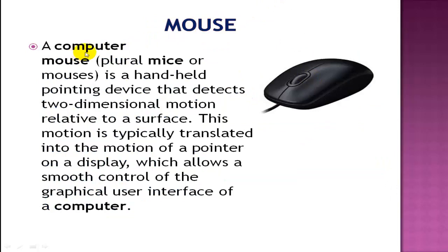Mouse: A computer mouse (plural: mice or mouses) is a handheld pointing device that detects two-dimensional motion relative to a surface. This motion is typically translated into the motion of a pointer on a display, which allows smooth control of the graphical user interface of a computer.